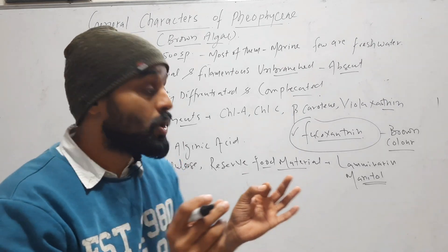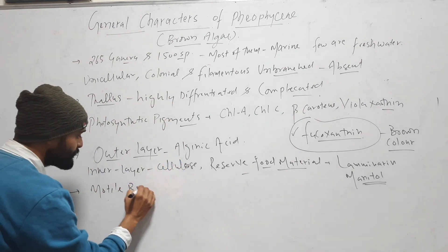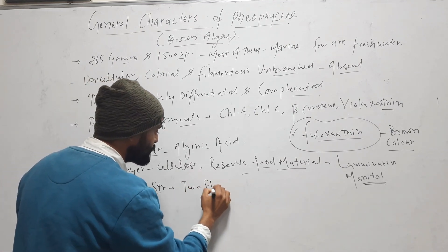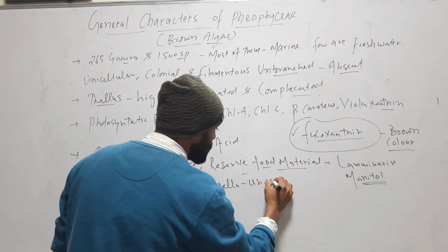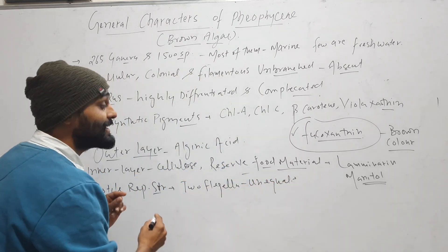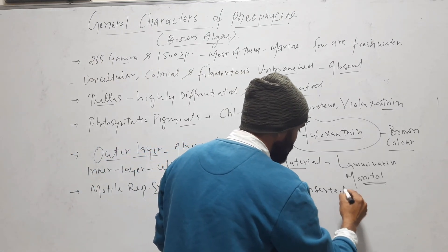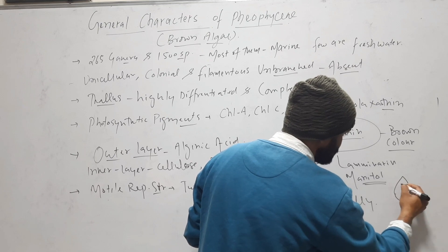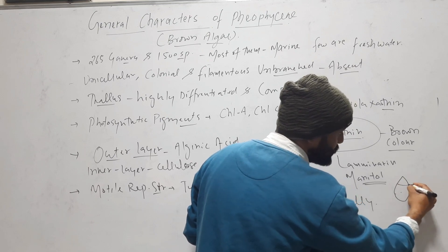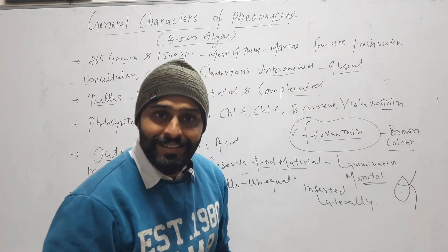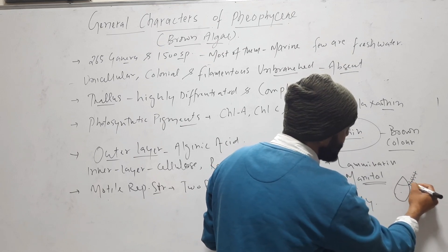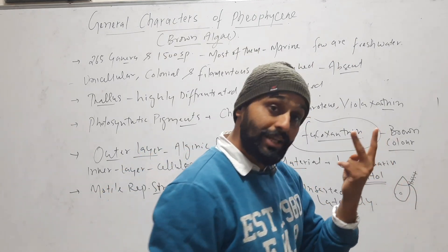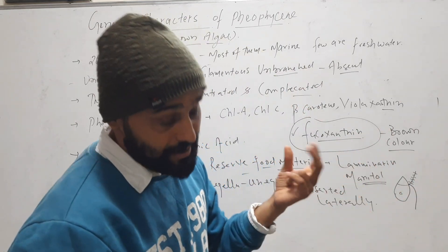When we talk about motile reproductive structures, they always have two flagella which are unequal and inserted laterally. One is larger and another is smaller in size. One is whiplash type and another is tinsel type. So motile reproductive structures in Phaeophyceae have two unequal flagella — one tinsel and one whiplash — inserted laterally.